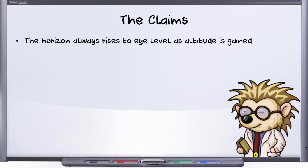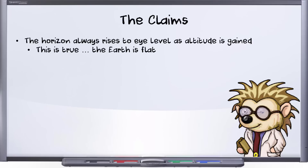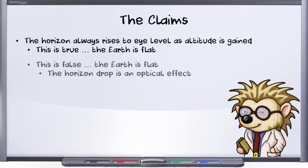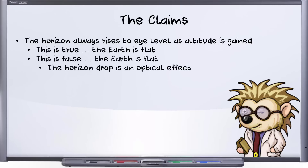Flat earthers are anything but unified on this issue. Some, like Dubay, say it's true and this is because the Earth is flat — they'll say this is how they know it's flat. Others say that the claim is false, that the horizon actually drops below eye level. This group would suggest that the drop of the horizon is due to an optical effect and does not indicate any curvature of the Earth itself.